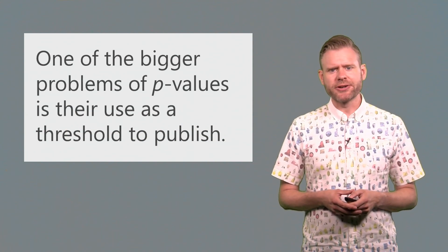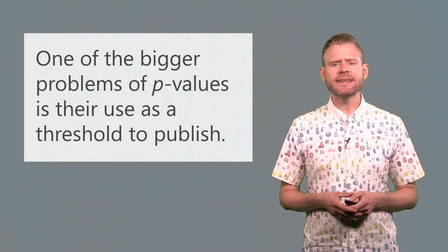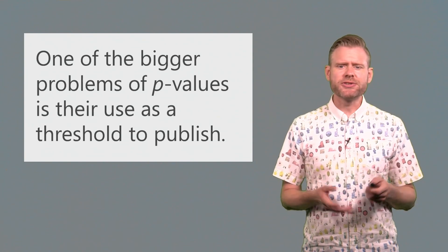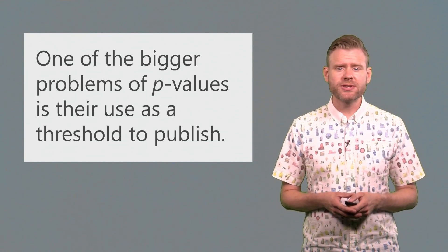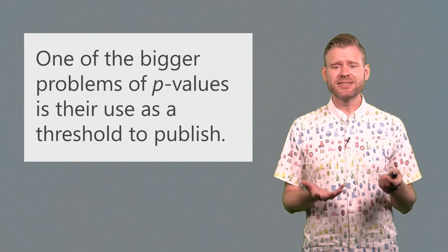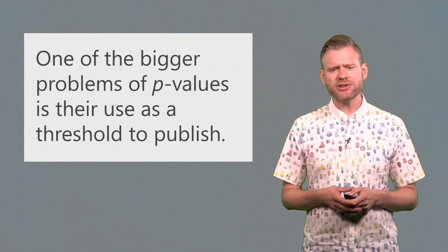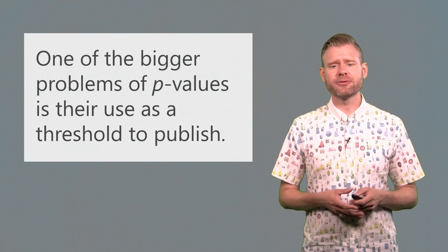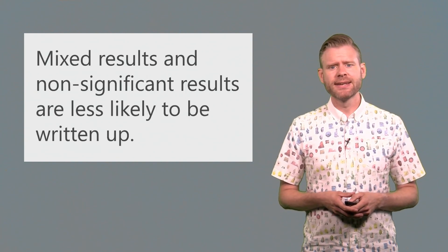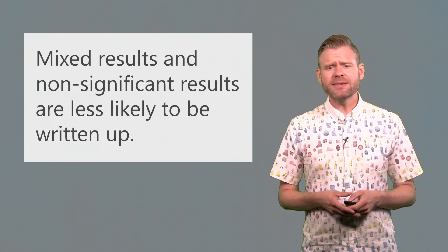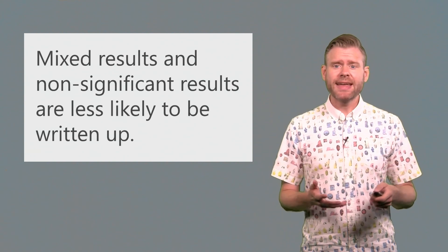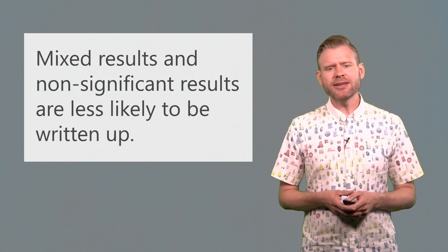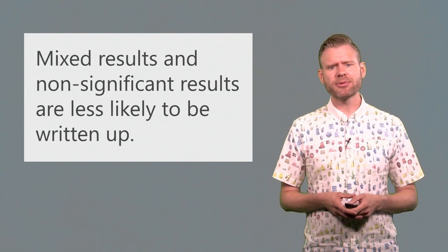If we look at the scientific literature, one of the bigger problems we see is that journals and researchers very often use p-values, and especially statistically significant p-values, as a threshold to either submit something for publication or to accept it for publication. At the same time, we know that mixed results should happen, and that these mixed results and non-significant results are much less likely to be written up.